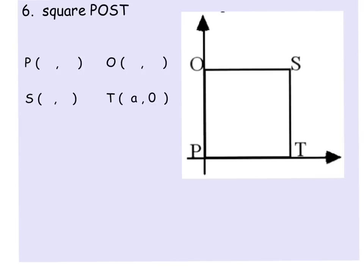In number 6, we have a square, and it is POST. And right here, it tells us that T is at (a,0). So I'm going to, over here, put the point (a,0). Well, what that means is that the distance from P to T is a, and because this is a square, we know all sides are congruent. So we know that the distance for each of these sides of the square is equal to a.